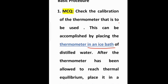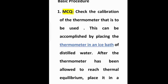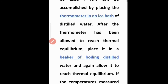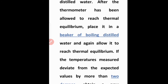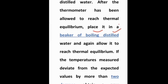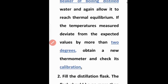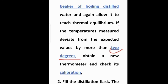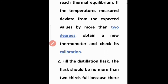After the thermometer has been allowed to reach thermal equilibrium in the ice bath, place it into a beaker of boiling distilled water and again allow it to reach thermal equilibrium. If the temperature reading deviates from the expected value by more than two degrees, obtain a new thermometer. For MCQs: the deviation threshold is two degrees. During distillation, the flask should be no more than two-thirds full.